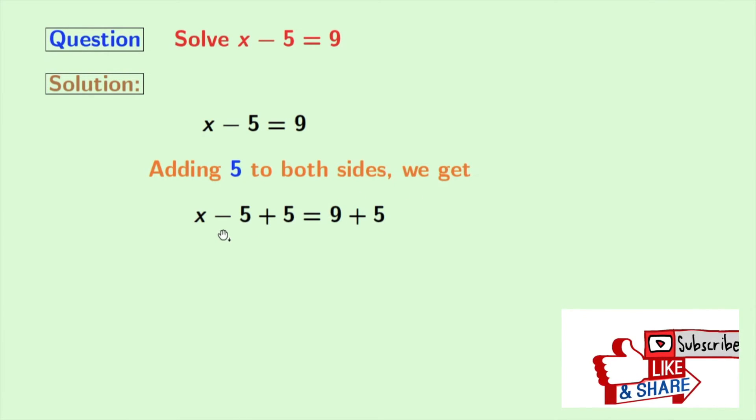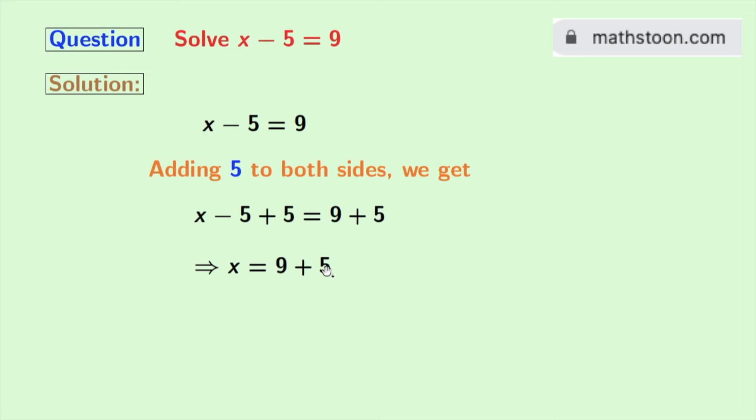Now look that we have minus 5 plus 5 in the left hand side which means 0, so we are left with x. And in the right hand side, we have 9 plus 5. Now as this is equal to 14, so finally we get x equals 14 as our answer.